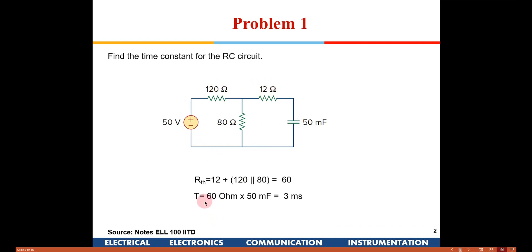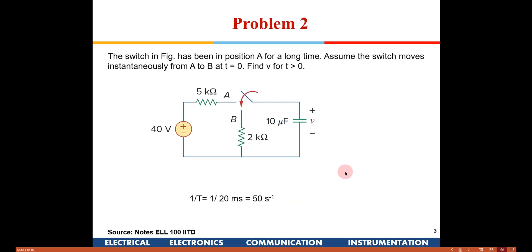The time constant of an RC circuit is given by RC, as we have seen in the theory. So 60 ohms times 50 millifarad gives us 3 milliseconds. This is the first problem. Let us take one more problem.